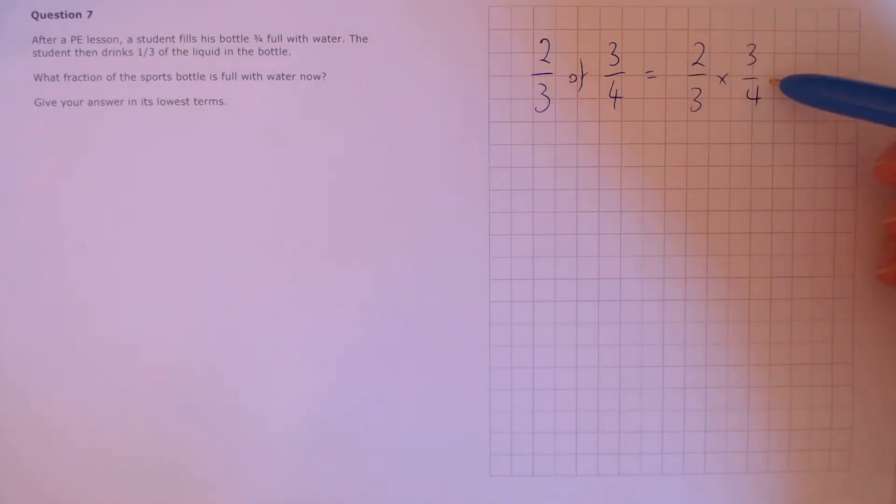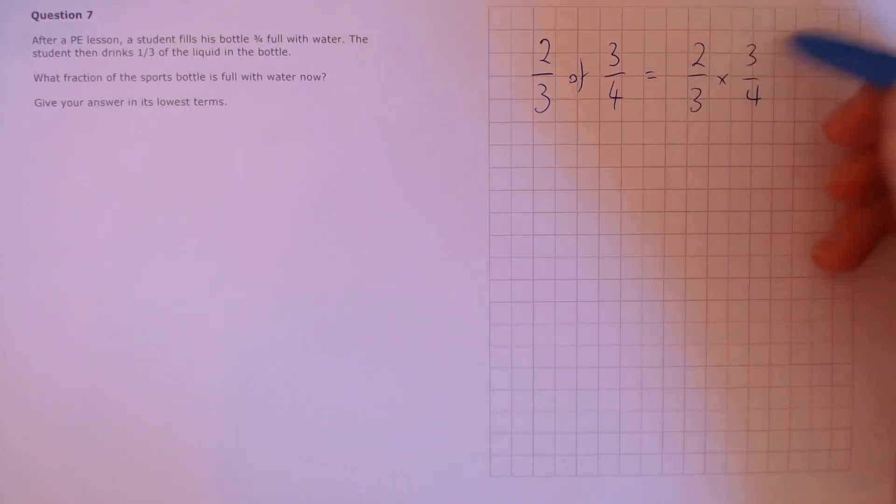If we want to multiply these two quantities together, we can multiply the tops of the fractions, that's 2 times 3 which is 6, and 3 times 4, which is 12 on the bottom.